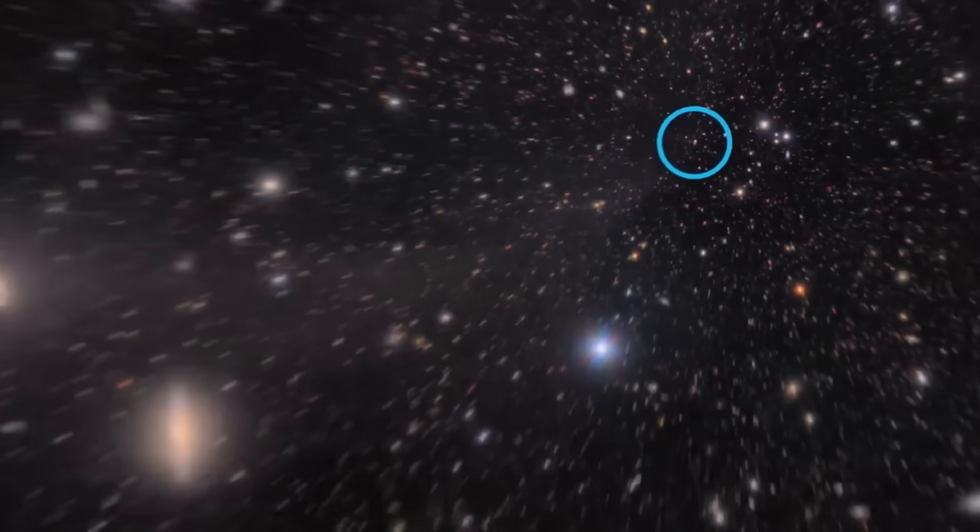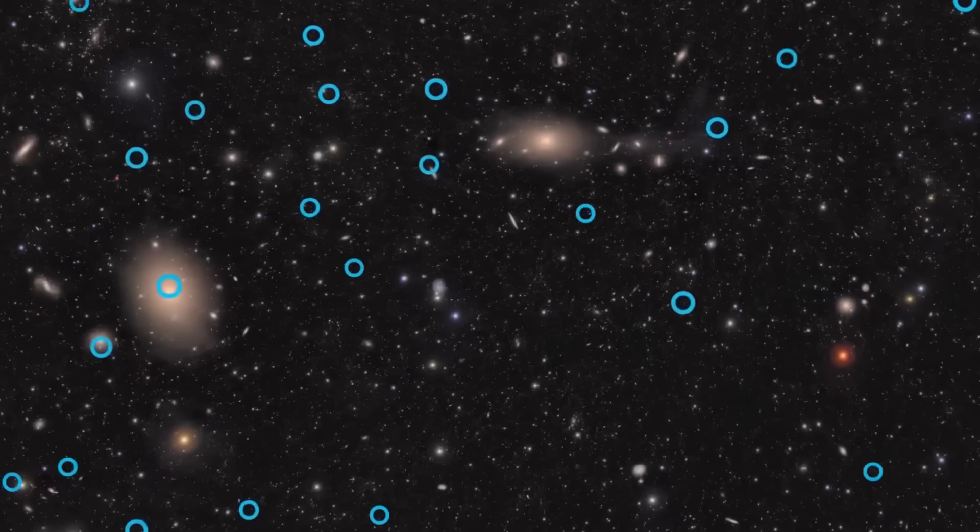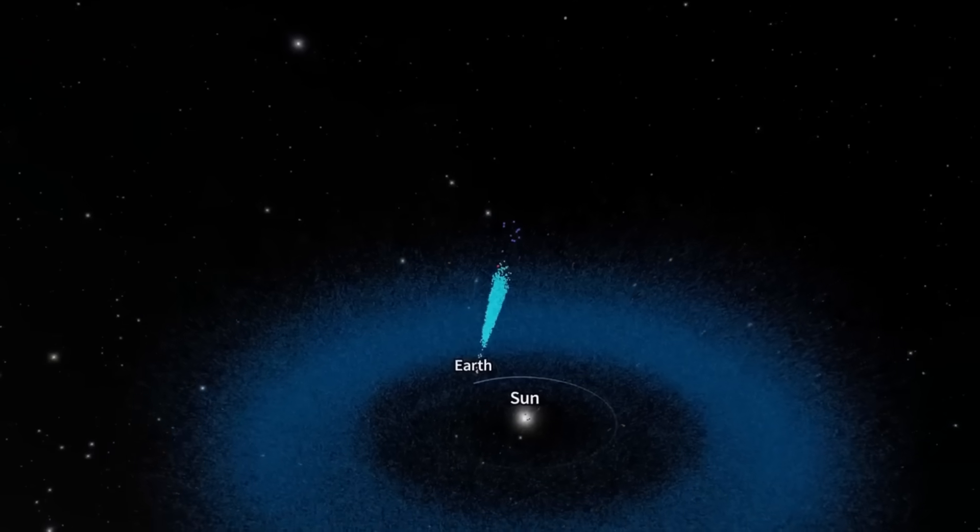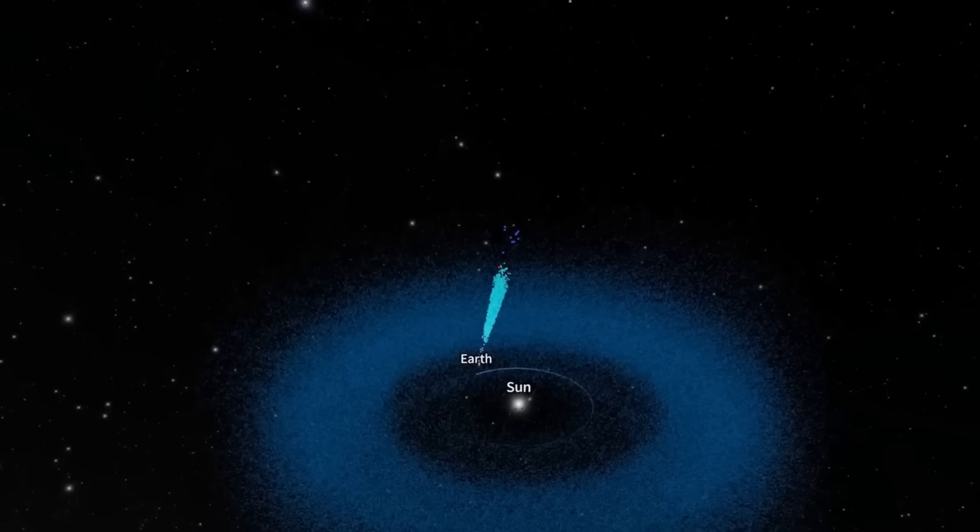And the most chilling part? These echoes were detected in the same regions where Webb discovered galaxies that formed impossibly fast. Could these galaxies be remnants, survivors from a time before time? If so, the story of our origin is not only older than we imagined, it might be endless.